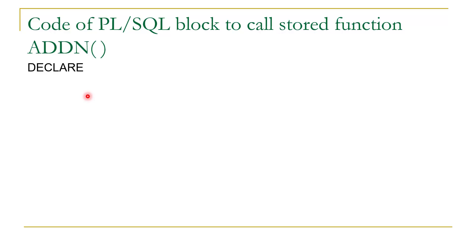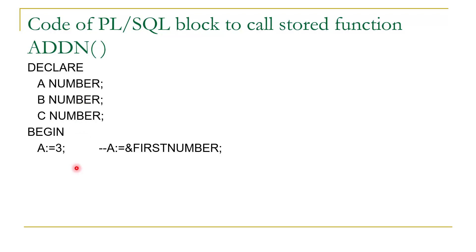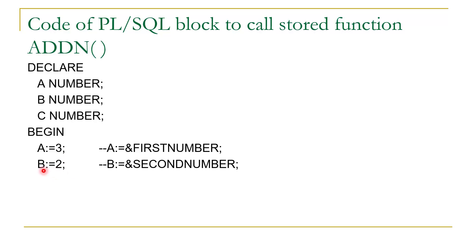This is the code of a PL/SQL block to call the stored function add_n. In the DECLARE section we declare variables for taking inputs and storing results: A and B are two input variables, and C is used to store the result. In the BEGIN section we assign 3 to A and 2 to B. Note that you can also take values using substitution variables; since we are working in Oracle Live, we are directly assigning values. If working on SQL prompt, you can use substitution variables to take values from the user.